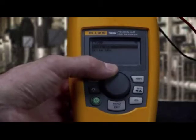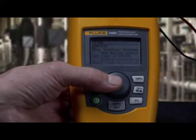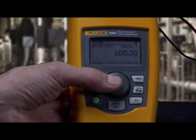The 709 has the ability to rerange a transmitter. Move the cursor to the range point you want to change, like the 100% URV point for example, and hit select.